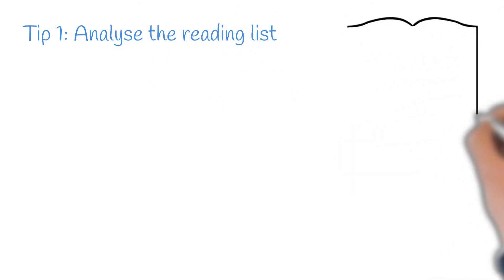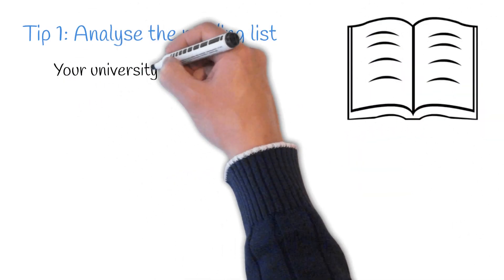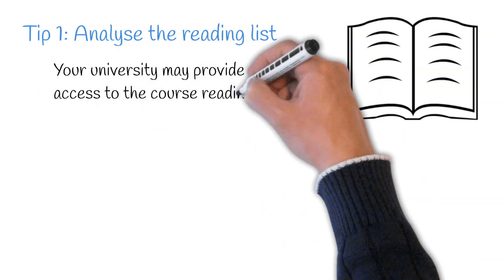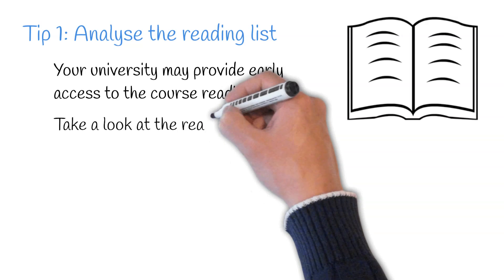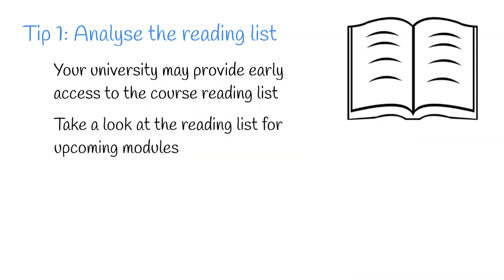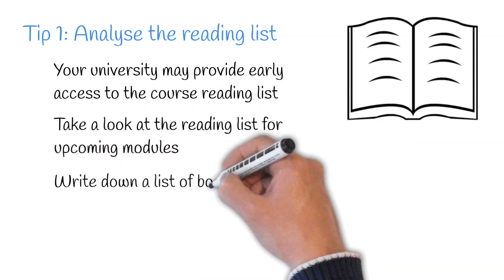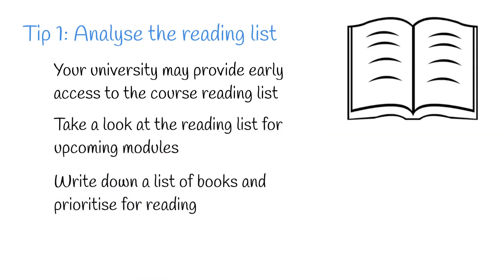Tip one, analyze the reading list. Your university may provide early access to some reading material before the course commences. If so, it would be a good idea to take a look at the reading list provided for upcoming modules. We suggest you write a list of books down and prioritize your own reading list for when you have access to the university library.